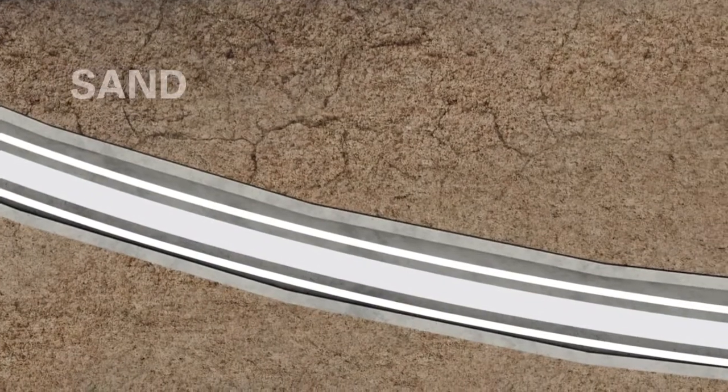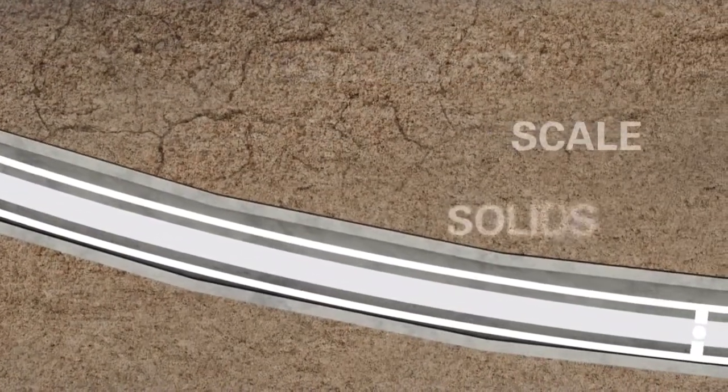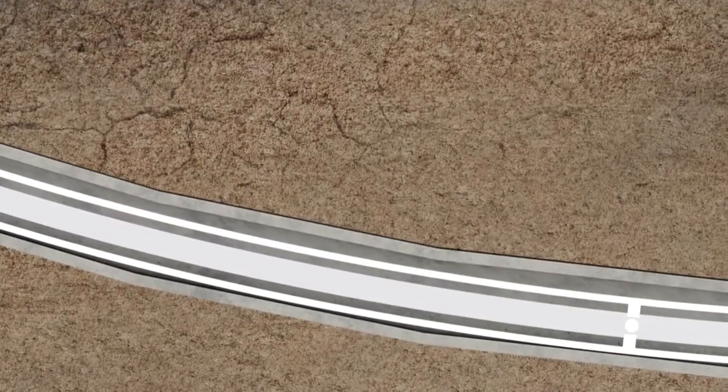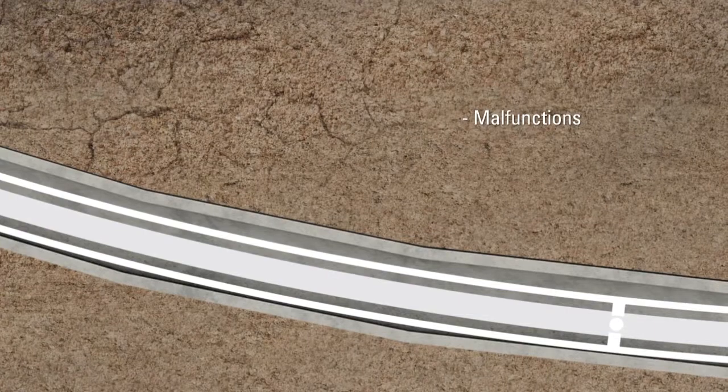Sand, paraffin, corrosion, scale, solids, and other debris settle around downhole equipment and the casing and tubing wall, often causing equipment malfunctions.